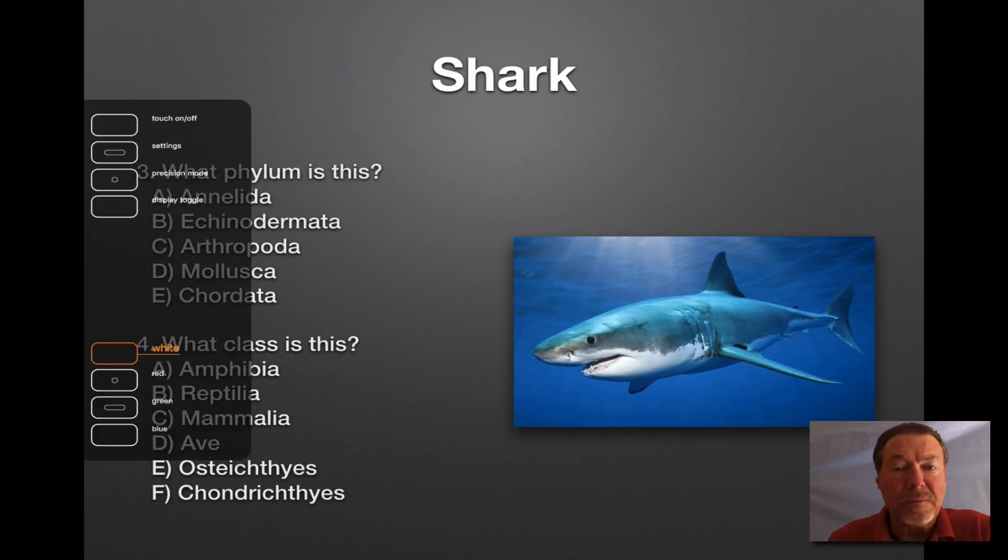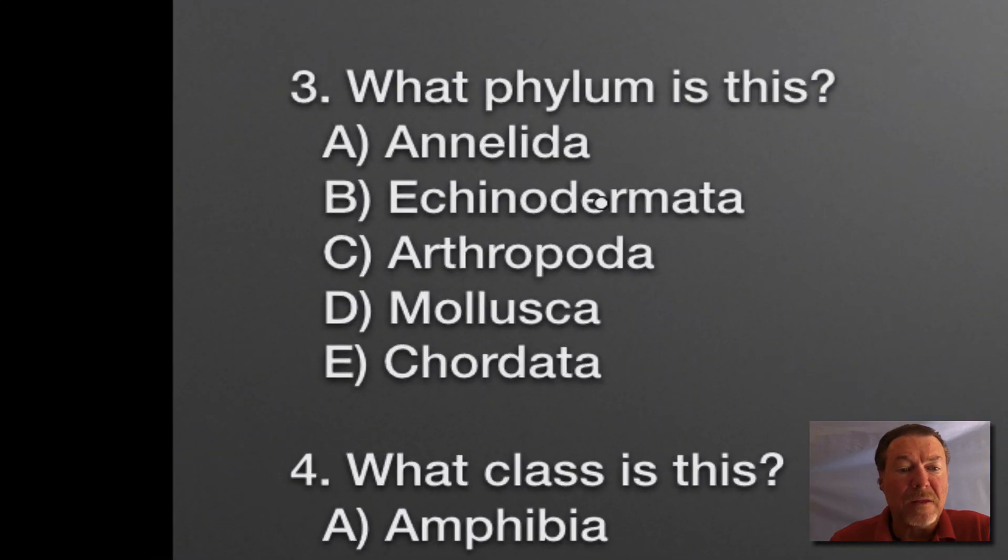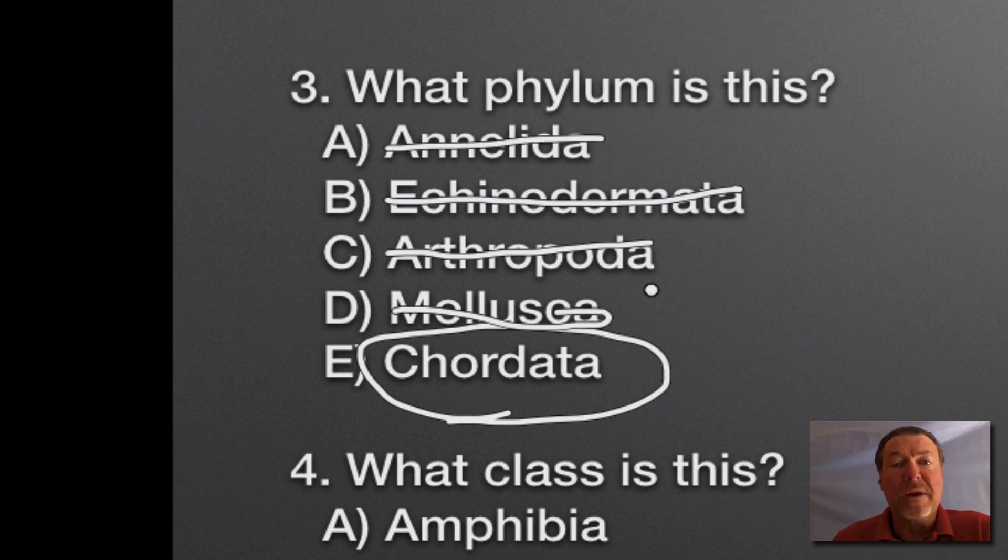The second specimen is a shark. Phylum is Chordata because it has a backbone. It's not Mollusca - clams and snails. Not Arthropoda - jointed legs with exoskeleton. Not Echinodermata - spiny skins. Not Annelida - segmented worms. Chordate is something that has a backbone or spinal cord. If we talk about the subphylum, it would be Vertebrata because it has a backbone, a vertebral column.